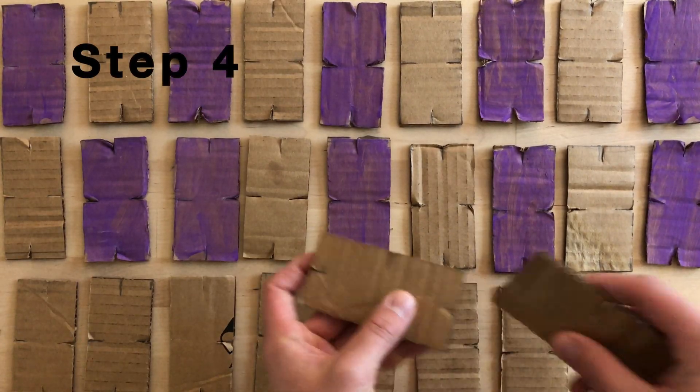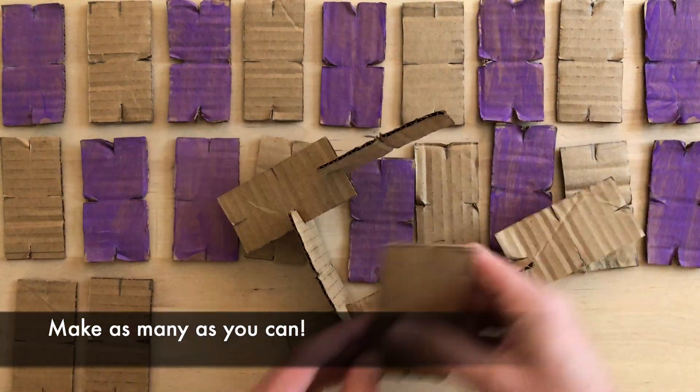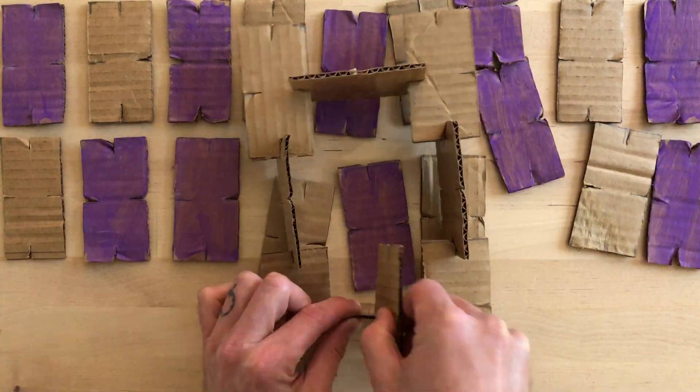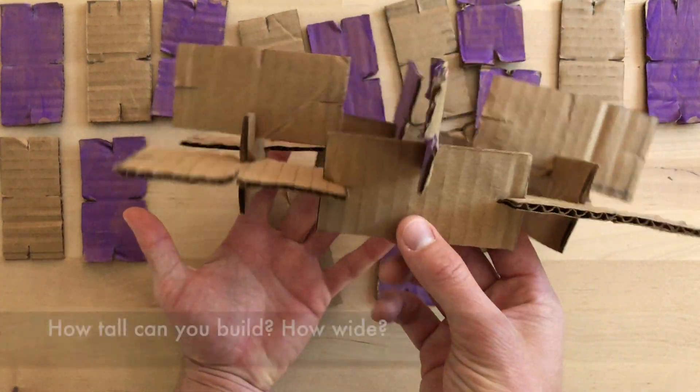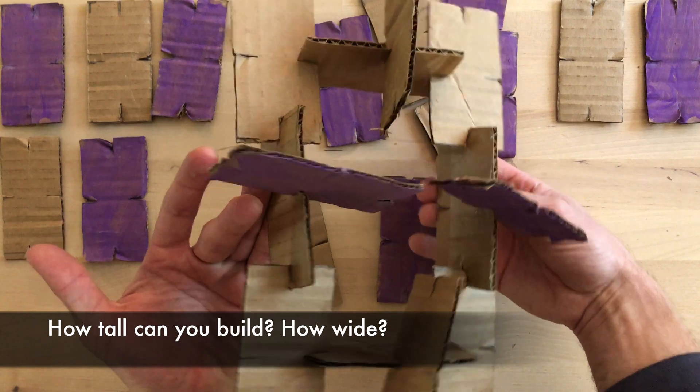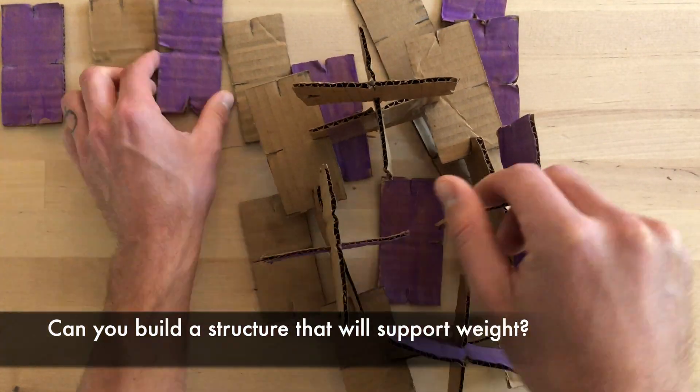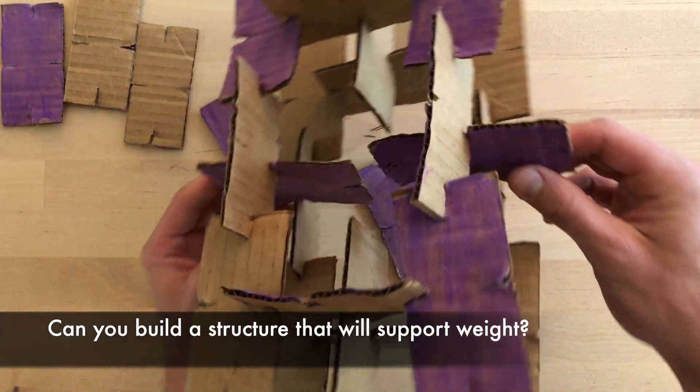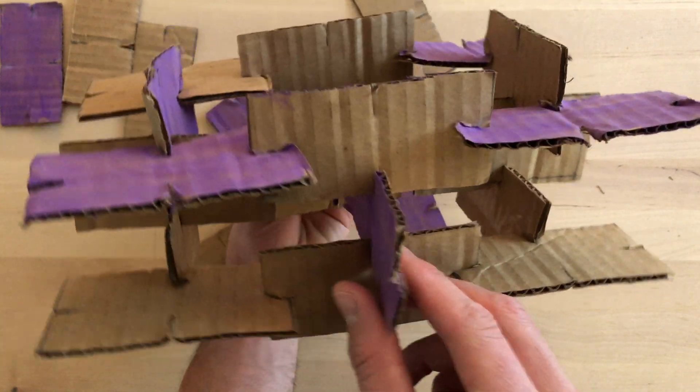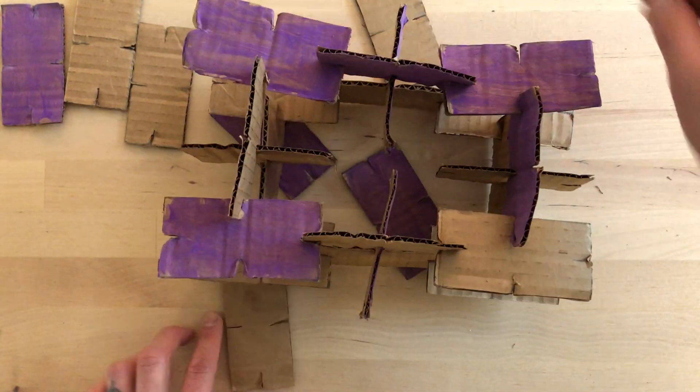Step 4. Remember, now it's time to build. Cardboard constructors are way more fun when you have a lot of them. Build towers or interesting structures by connecting them together using their grooves. See how high or how wide you can build your structure, or try building a structure that can support weight, like a book. You are truly only limited by your imagination. Have fun building, makers!